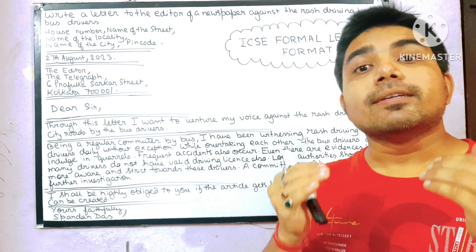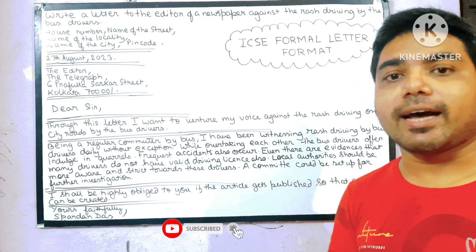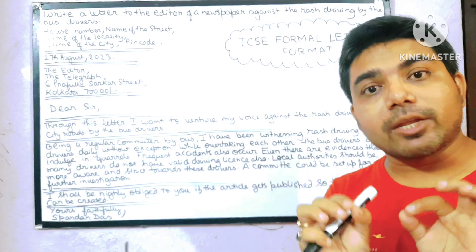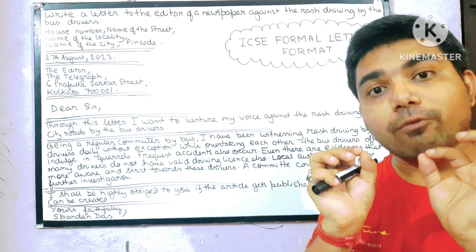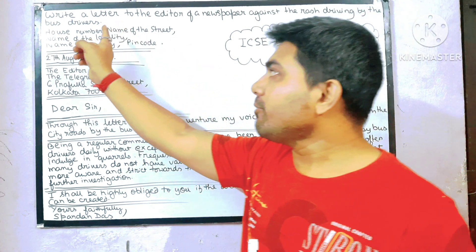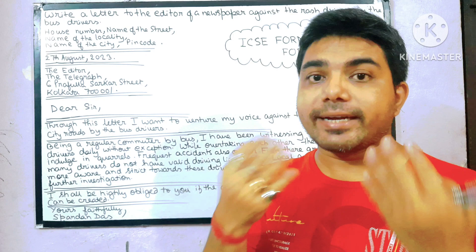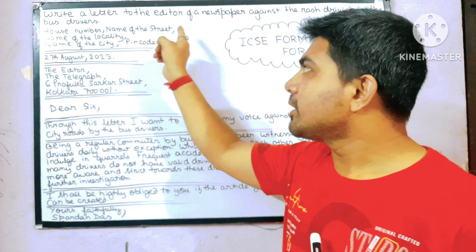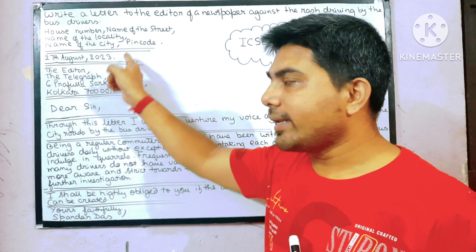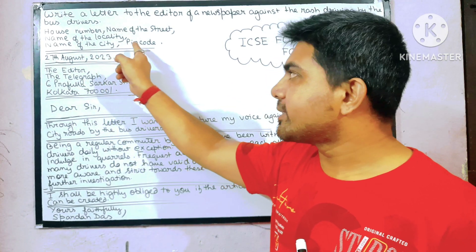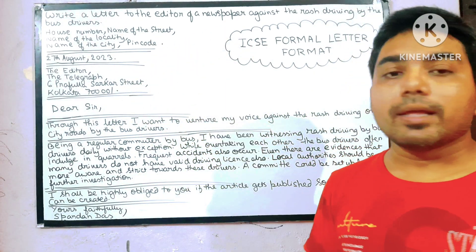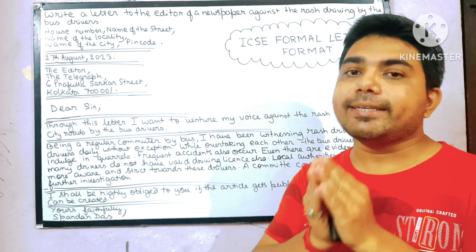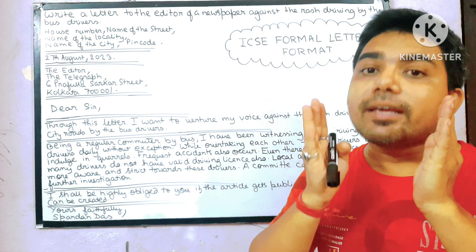In case of a formal letter, first we have to start with the sender's address. This address writing has a particular protocol and format we have to follow. First we have to give the house number, then put a comma, then name of the street with a comma, next line name of the locality with a comma, next line name of the city with a comma, then pin code and full stop. The house number, name of the street, name of the locality, and name of the city can be imaginary.